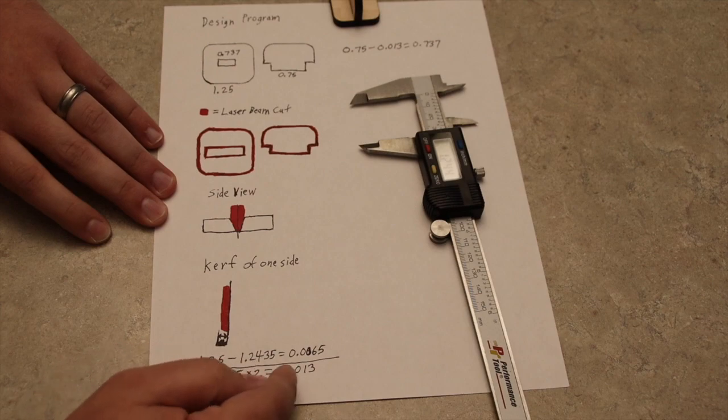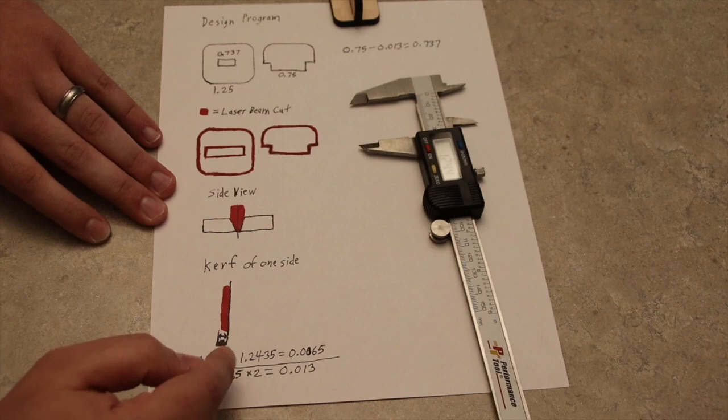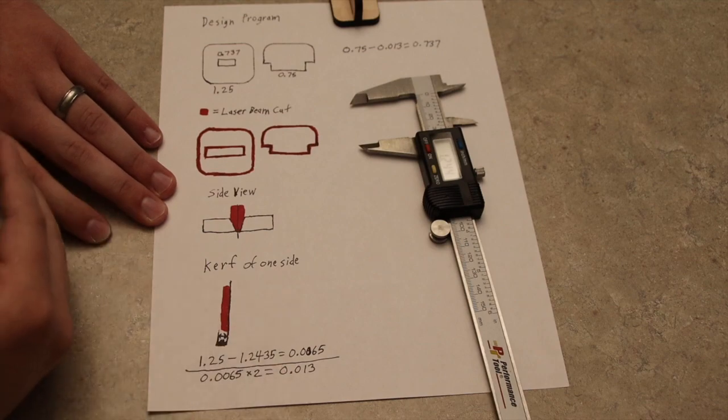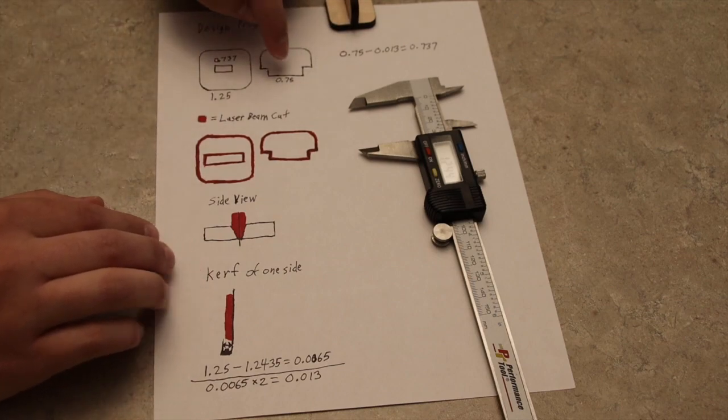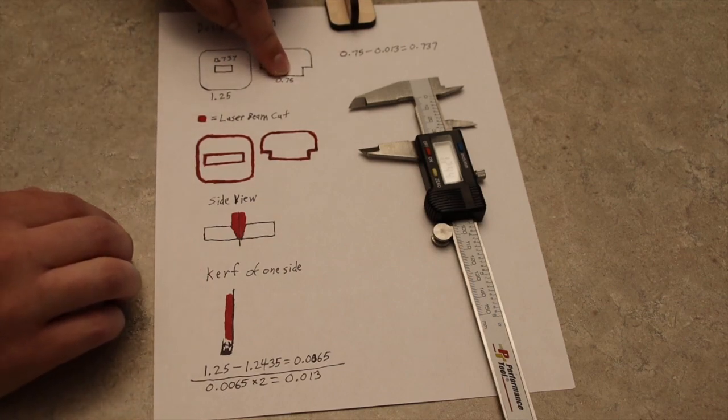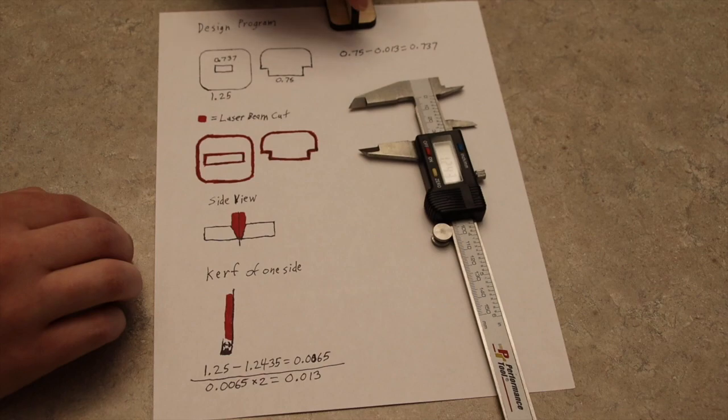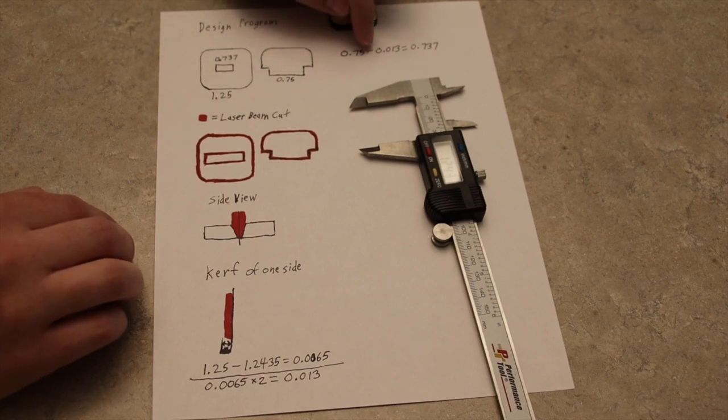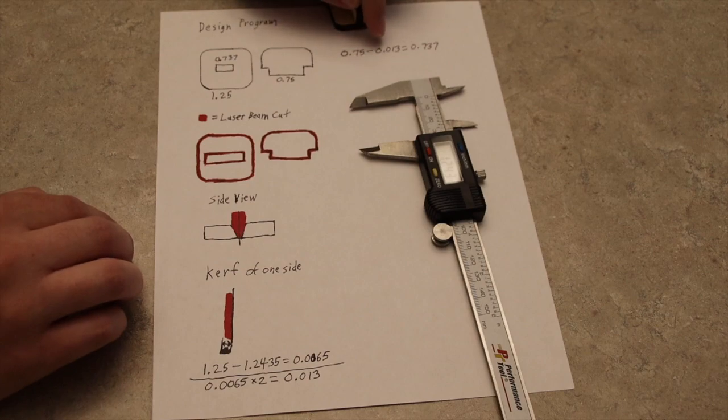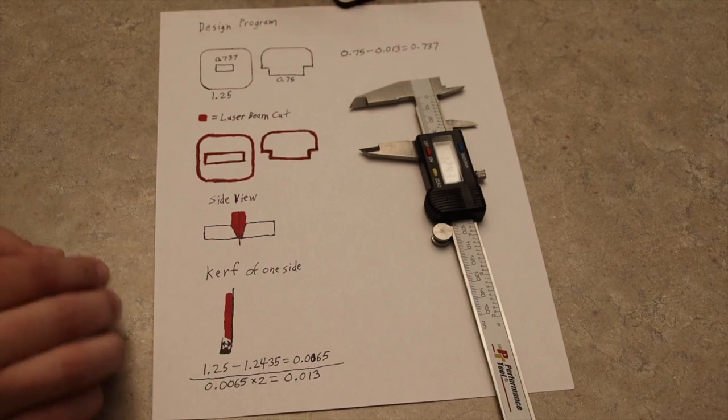Then all I did with that is I doubled it, so you get 0.013. I like to design with it doubled up so it's easier. Then I take the actual part that's going to be falling in and I make my slot minus that kerf of both of them doubled, which is that 0.013, and that's how I came up with that slot size.